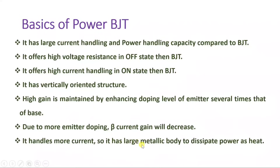Power BJT handles more current and therefore has a large metallic body to dissipate power as heat. In summary, Power BJT offers high voltage resistance in off-state, high current handling in on-state, has a vertically oriented structure, increases current handling capacity by enhancing doping in the emitter — though beta decreases — and requires a large metallic body for heat dissipation.